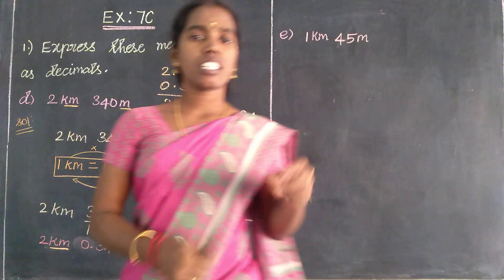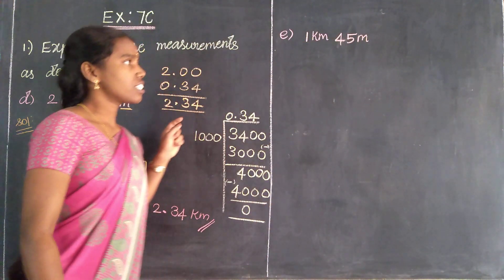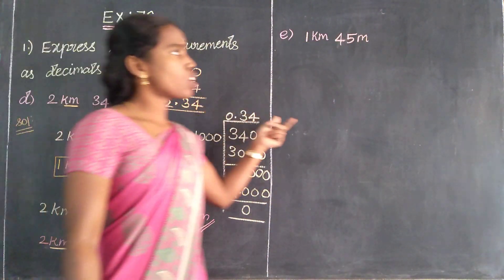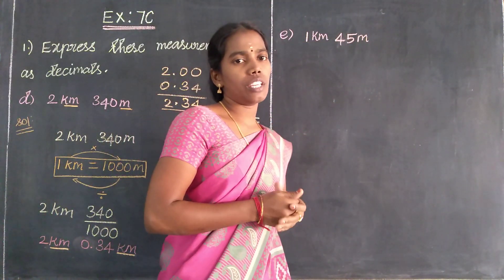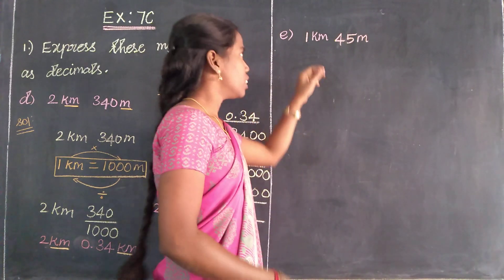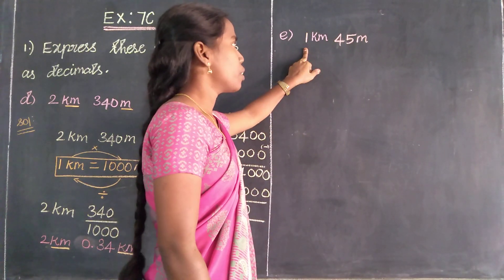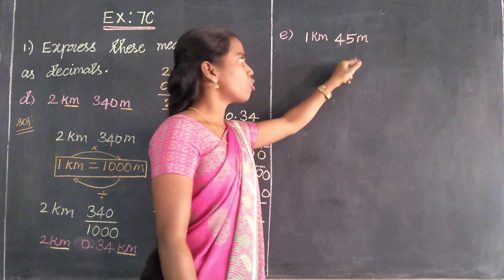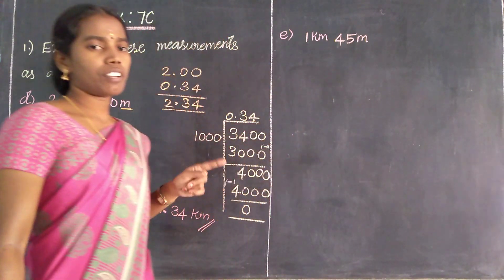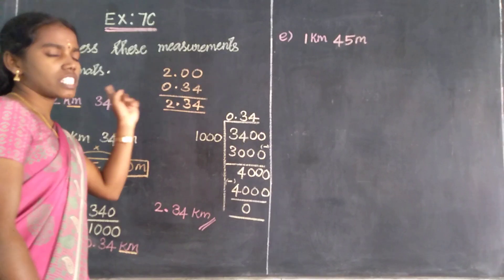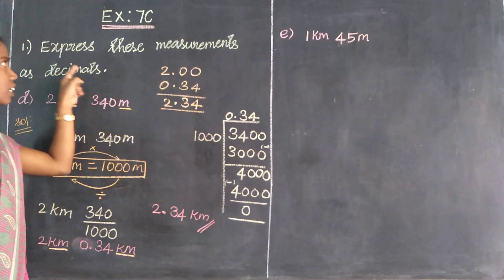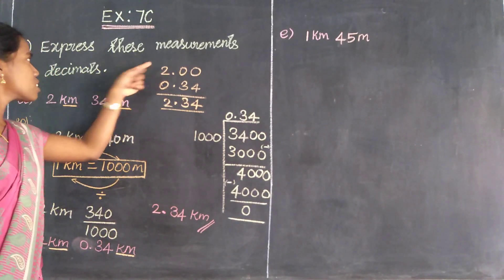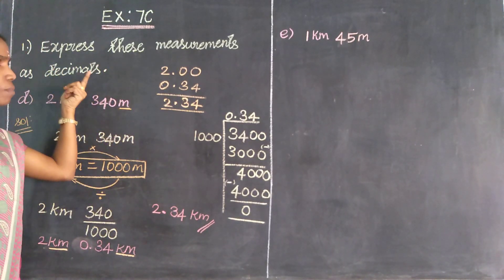Welcome students. This is exercise 7C, first Roman, last problem E. The problem gives 4 kilometers 45 meters. Express these measurements as decimals.